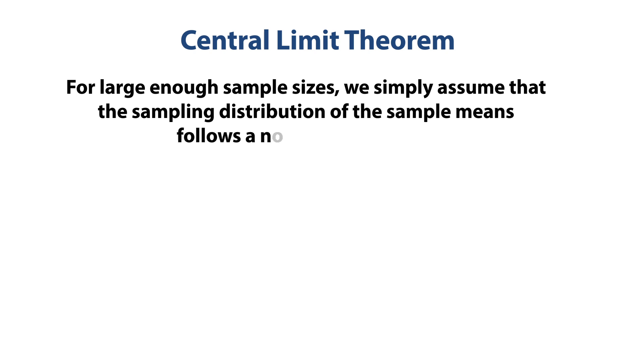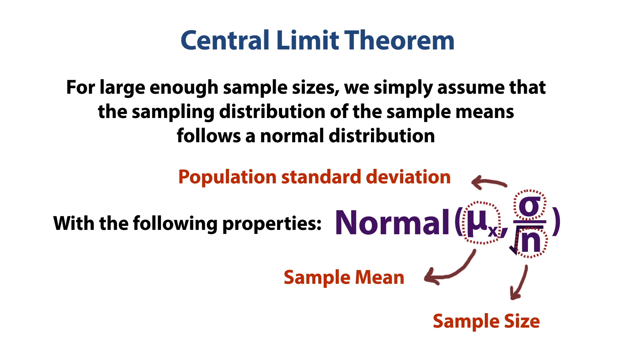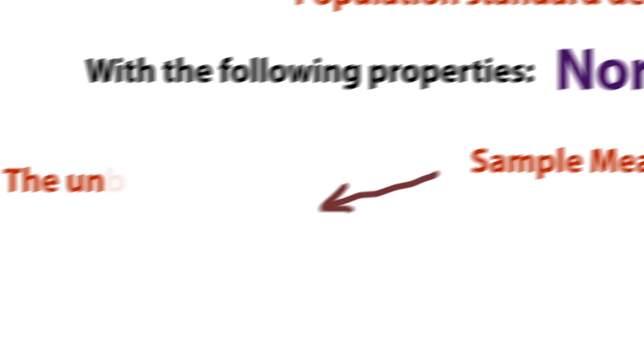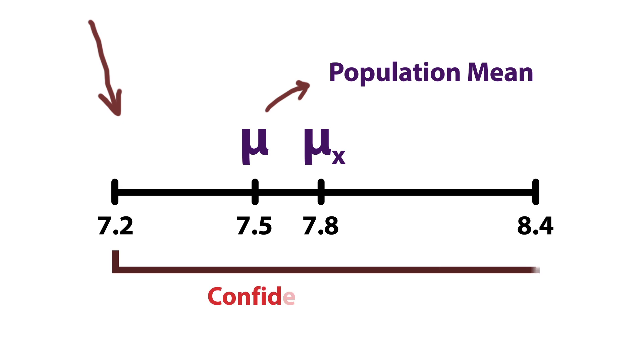Using CLT, you don't do this procedure. For large enough sample sizes, we simply assume that the sampling distribution of the sample means follows a normal distribution with the following properties. You take the sample mean as the estimate of the population mean. However, we know that the sample mean will not perfectly match the population mean. For that, we construct confidence intervals.